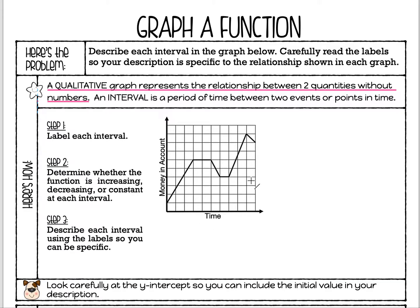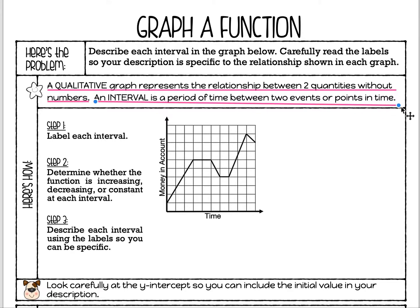This graph is a qualitative graph showing the relationship between the amount of time and the money in someone's account. We don't know what the time is — is it weeks, months, or years? We have no idea, so it's up for interpretation. Now, an interval is a period of time between two events or points in time.